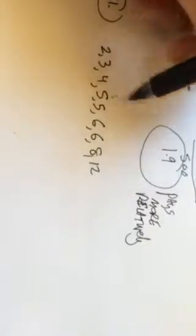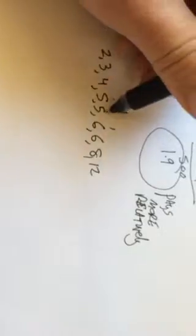And then what we're going to do is we're going to find the median. Counting from both ends: 1, 2, 3, 4. So it looks like the median, the one that's in the middle here, is 5.